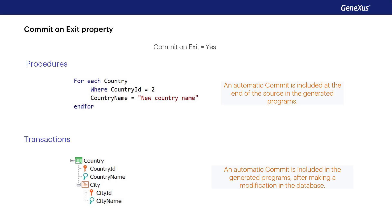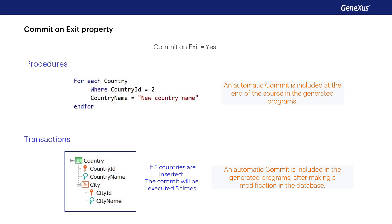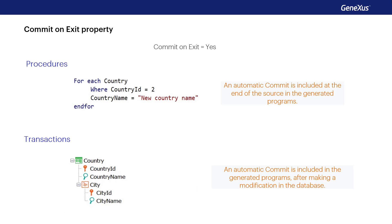For example, if there is a Country transaction with City as the second level and five countries are inserted through its form, the commit will be executed five times — after saving the information of each country and its cities, but before the execution of the rules conditioned to the After Complete moment.